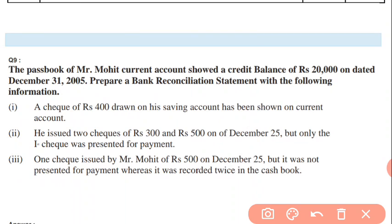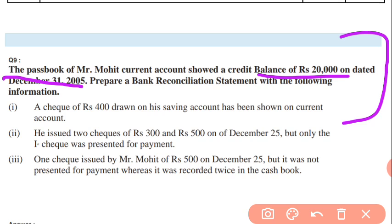Whenever I am explaining, you have to note down all the solutions as well. So question number 9 — open your books, you can see on the screen also. The passbook of Mr. Mohit current account showed a credit balance of 20,000. Now the passbook recording: the items that are plus in the cashbook will be treated as minus here, and the ones that were minus will become plus. First transaction: a check of 400 drawn from his saving account on current account — so minus item hua, but passbook recording mein plus ho jayega.